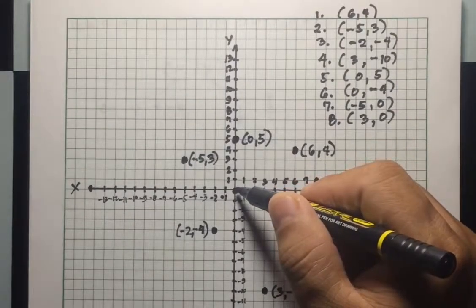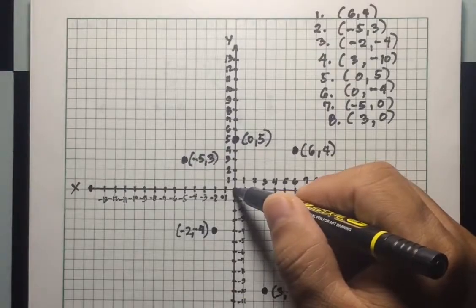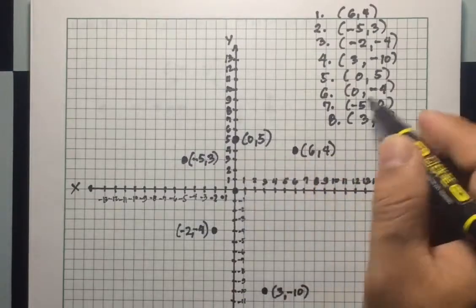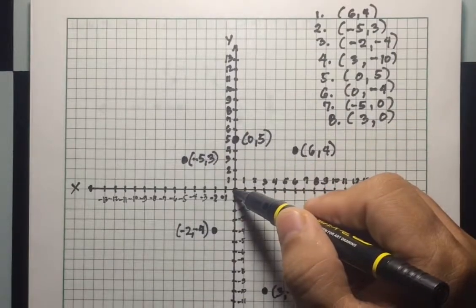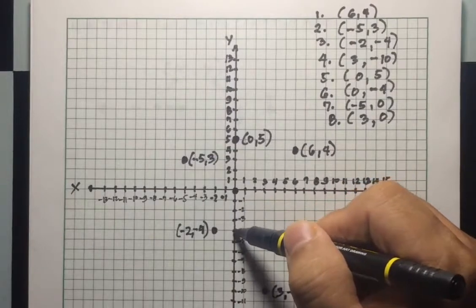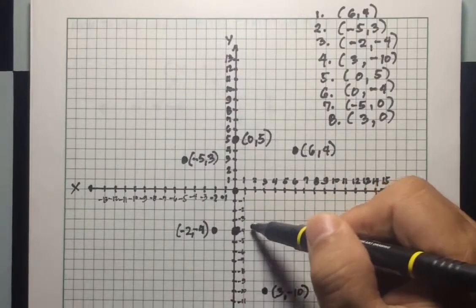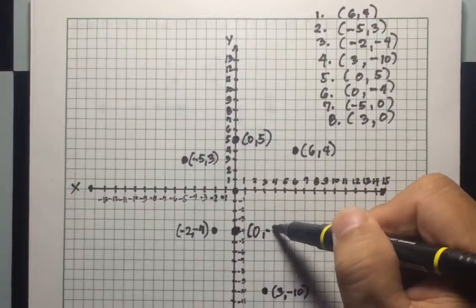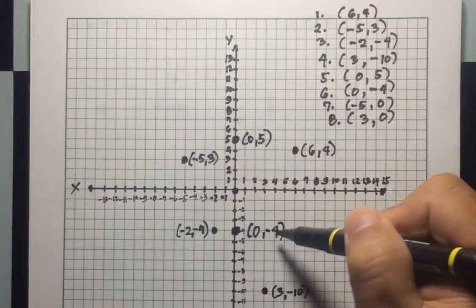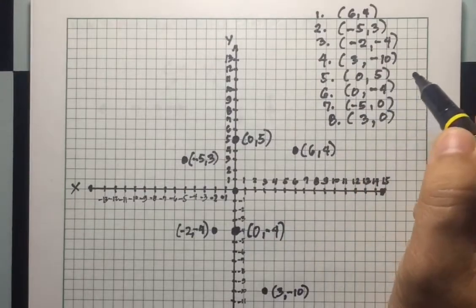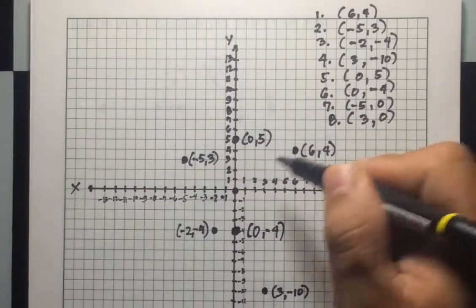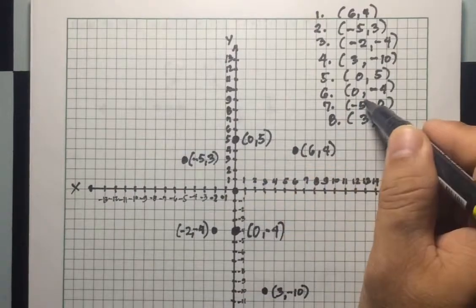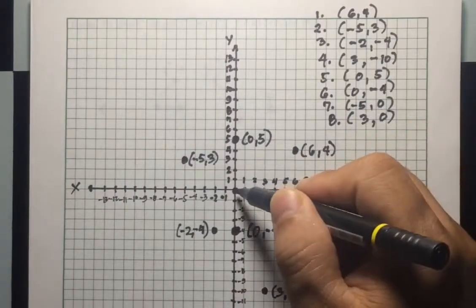For number six, the point is (0, -4). Again X is zero so do not move horizontally. Y is negative four so move four units downward: one, two, three, four. This is point (0, -4).